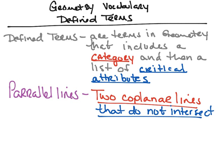The last defined term is parallel lines. Most of us are familiar with parallel lines — these are two co-planar lines that do not intersect each other. Unlike skew lines, they are on the same plane. If I draw a plane and place two lines on it that do not intersect, we would call these parallel lines. Remember the difference: parallel lines and skew lines both don't intersect, but parallel lines are on the same plane, whereas skew lines are non-co-planar.